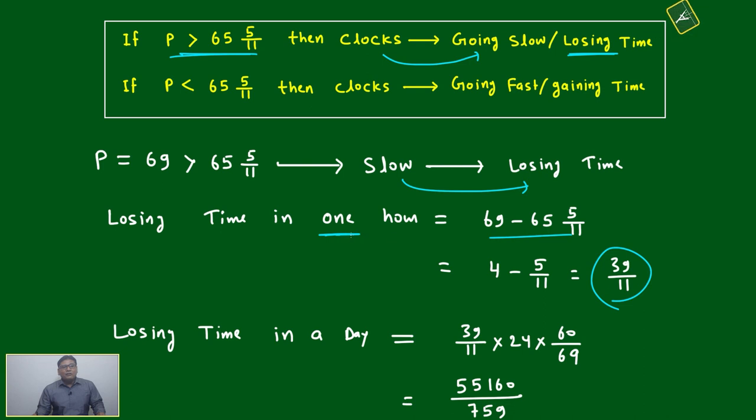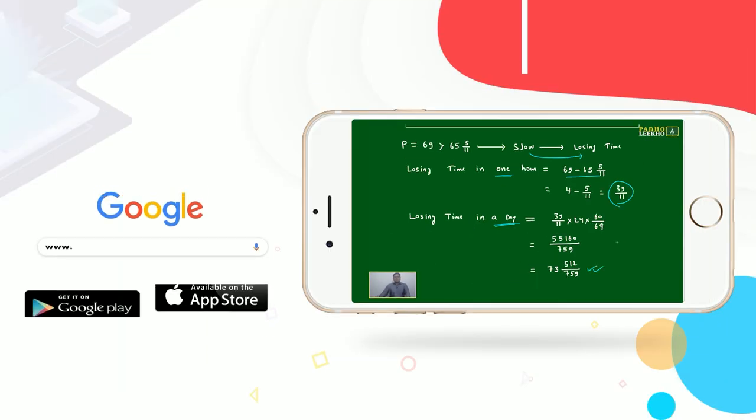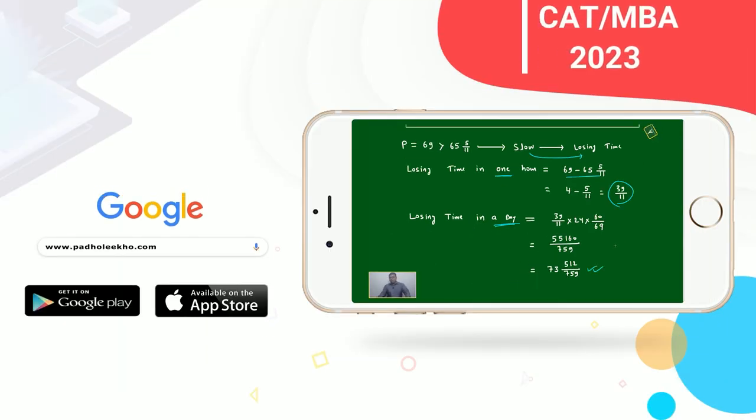In one hour, it will lose 39/11. In one day, just multiply by 24 × 60 ÷ 69. Then you will get how much losing - this much time will be lost in one day by this clock if they are crossing each other consecutively after 69 minutes.